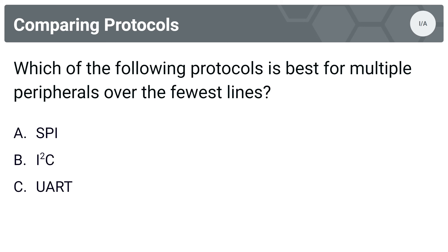Next question: which of the following protocols is best for multiple peripherals over the fewest lines? Options are A, SPI; B, I2C; or C, UART. The answer is B, I2C. There are only two protocols which support the fewest signal lines — I2C or UART — and only one of those, I2C, supports multiple peripherals.